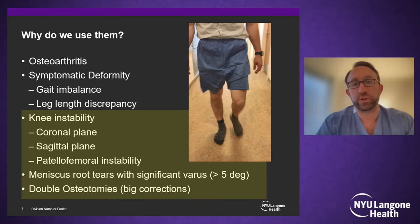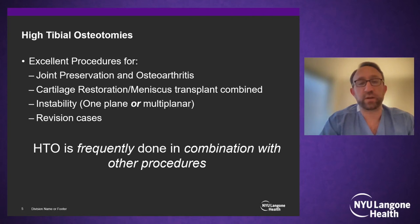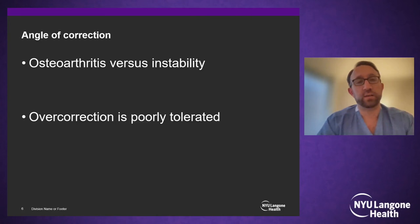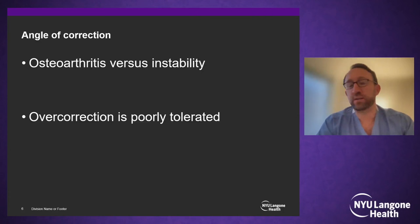We also use double osteotomies for big corrections — one above the joint and one below — to achieve a good outcome in one surgery. HTOs are excellent procedures for joint preservation, OA, cartilage, instability, and revision cases, frequently done in combination with other procedures in staged or single-stage fashion. When planning osteotomies, we must define whether we're correcting for osteoarthritis or instability, because that determines where we put our mechanical axis. For instability, we keep the axis roughly at 50%; for OA, we may go to the traditional Fujisawa point of 62.5%.